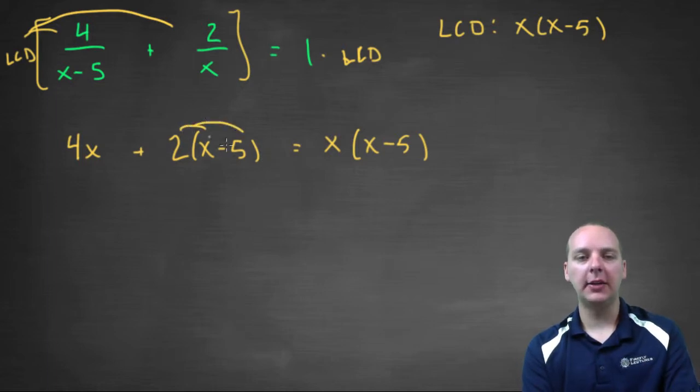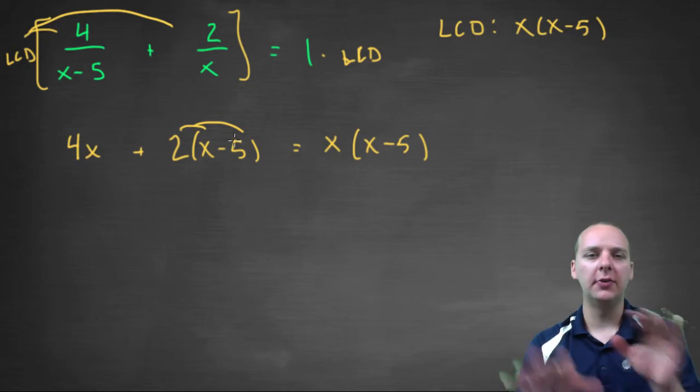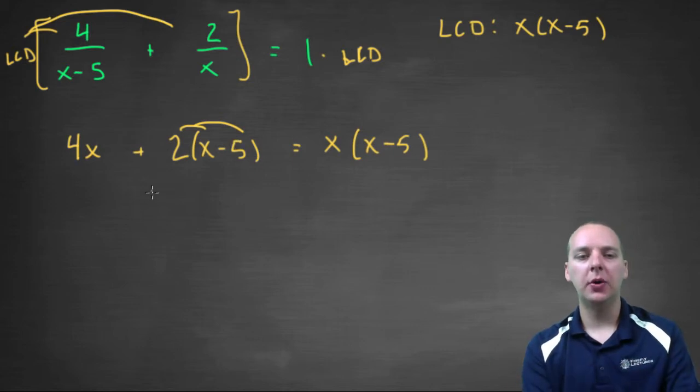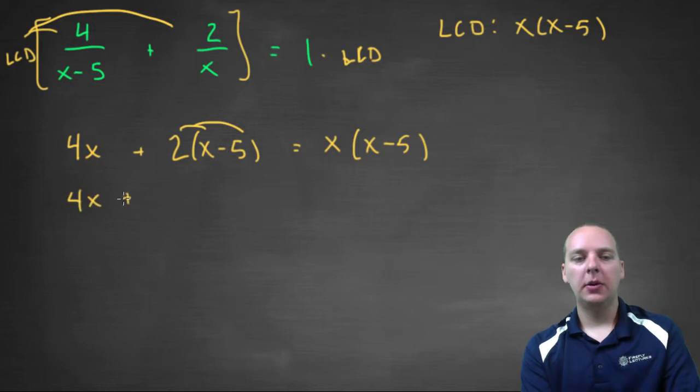Let's do the simple math like distributing out, so I can see all the individual terms, see what I have to work with. We've got four X, plus two X minus ten, equals X squared minus five X.